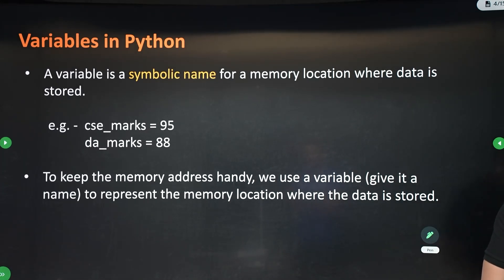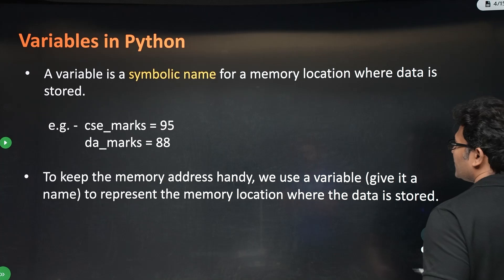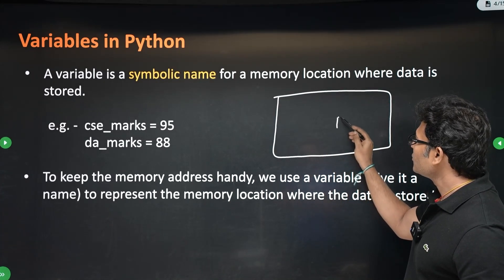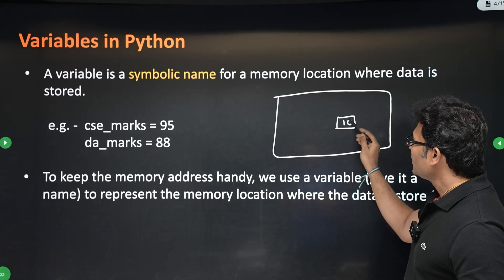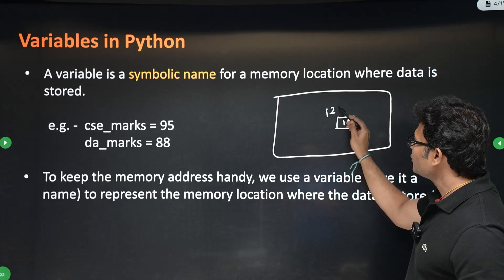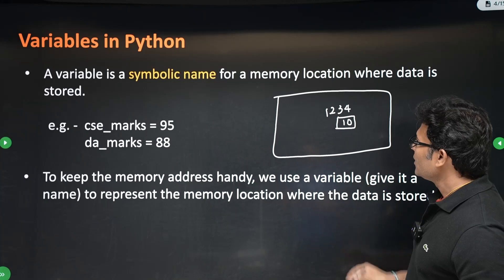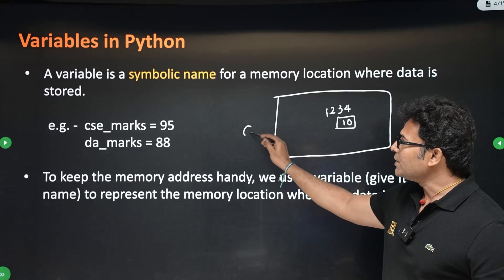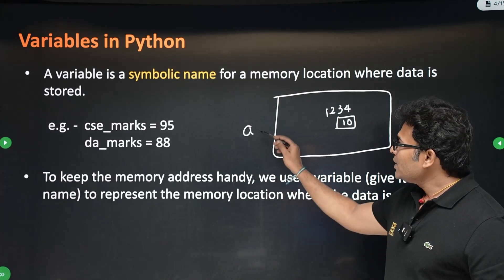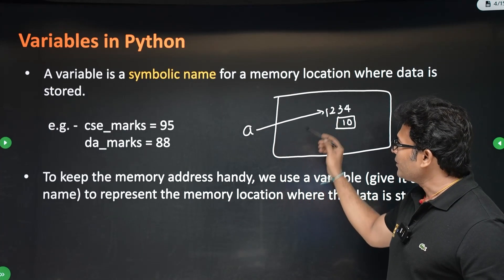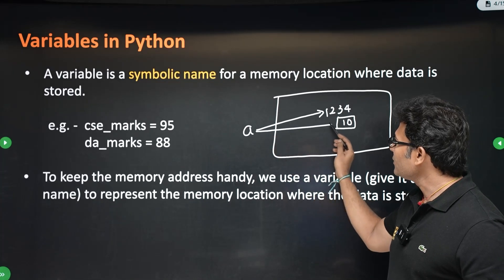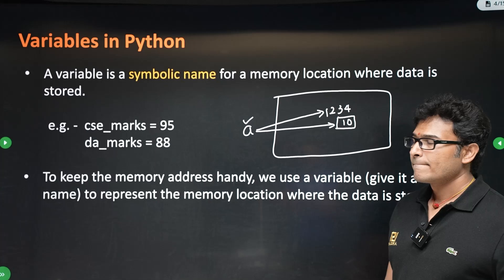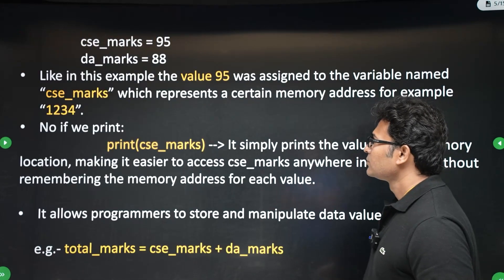What I mean to say is, let us say this is the memory and somewhere you are storing the value of 10. Let us say the memory address is 1234. Instead of remembering this 1234, if you use a variable name, let us say a, now a is a synonym to the memory address. So you can access this value of 10 by using the variable name.